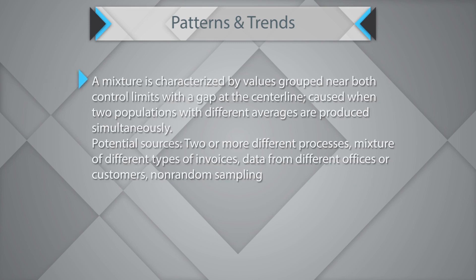A mixture is characterized by values grouped near both the control limits with a gap at the central line. It is caused when two populations from different averages are produced simultaneously, essentially pointing towards two populations within the same dataset. Potential sources could be two or more different processes, mixtures of different kinds of invoices, data from different offices or customers, or non-random sampling.